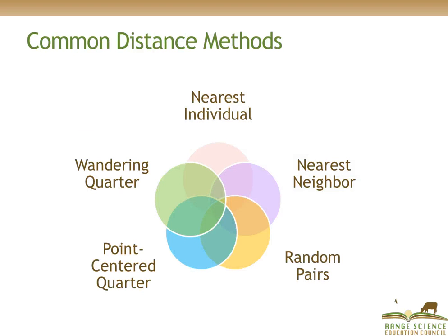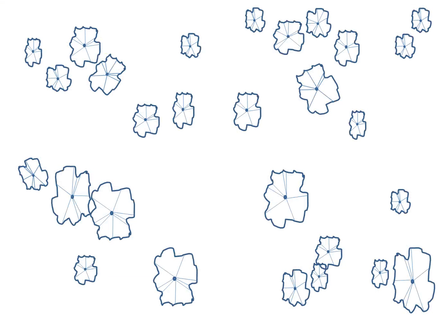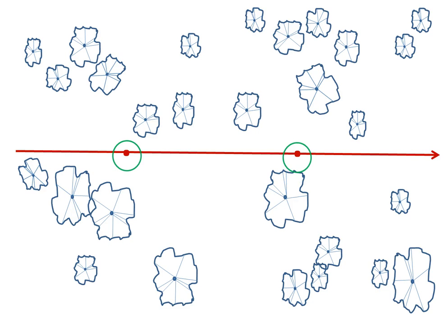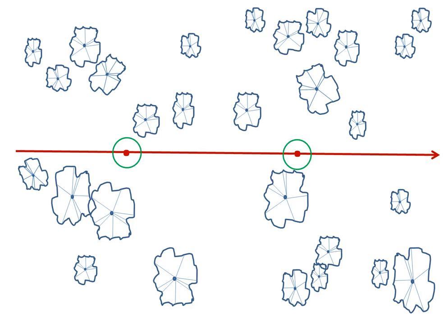In the next part of the presentation, we are going to focus on the most common distance methods: nearest individual, nearest neighbor, random pairs, point center quarter method, and the wandering quarter method. The principle that unites distance methods is the use of a transect placed through the area of interest, with multiple sampling points located across the area or on the transect.